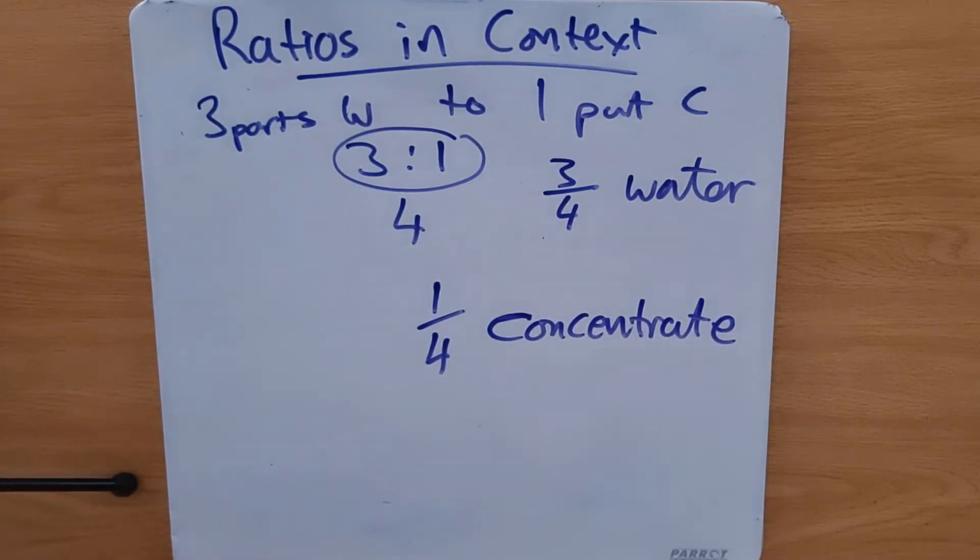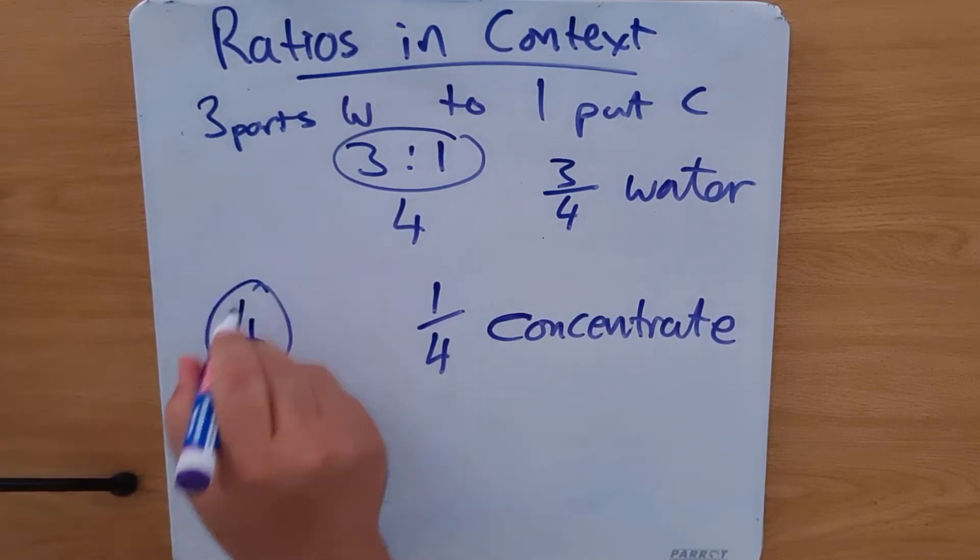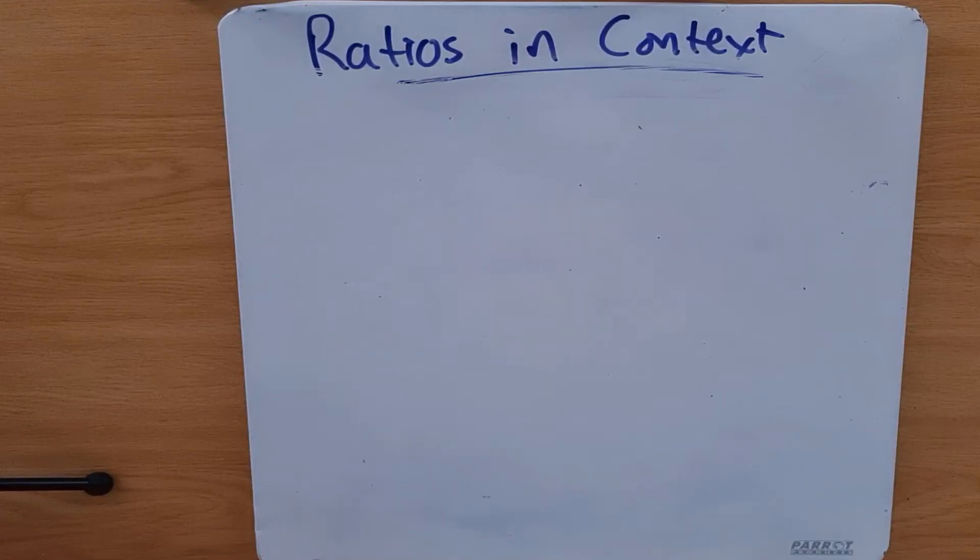When we add both of these, what do we get? We get four parts. So this is how we deal with ratios in context. Here's another one: they talk about Alexandra, and Alexandra is making bracelets.